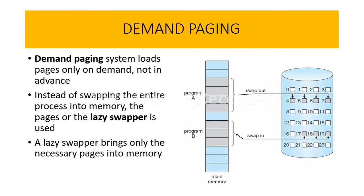As we know, the process normally resides on the disk, and whenever we want to execute it we swap it into the main memory. The task of demand paging is to load only those pages of the process which are required for execution, instead of loading the entire program and wasting memory.